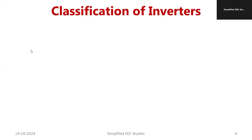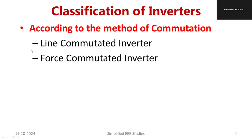The first classification is based on commutation. Commutation is the method of turning off the power switches. There are two types of inverters according to commutation: line commutated inverter and force commutated inverter. In a line commutated device we do not have any external mechanism to turn off the devices, but in a force commutated device we require some external devices to turn off the inverter. That is the major difference between line commutated inverter and force commutated inverter.